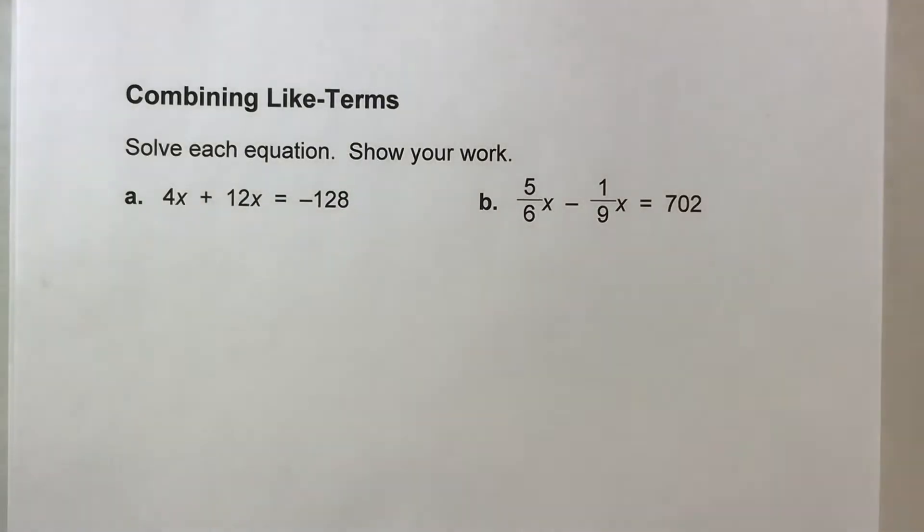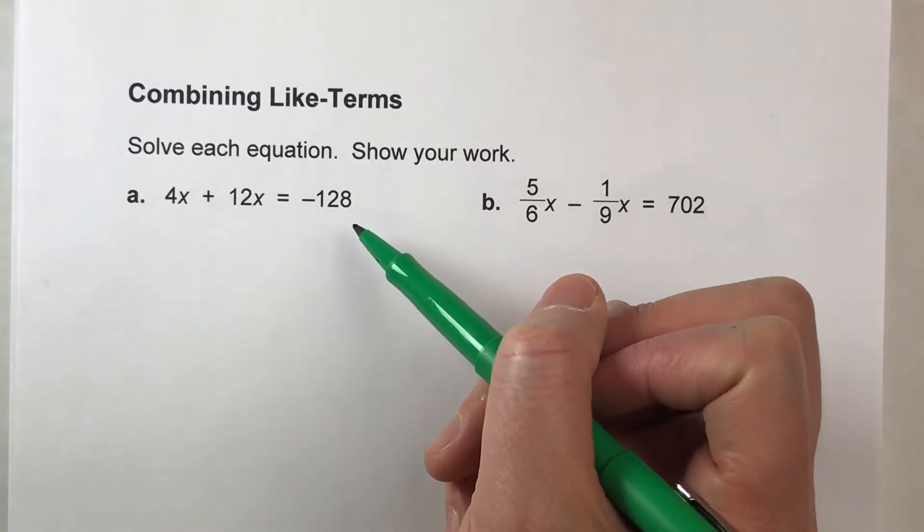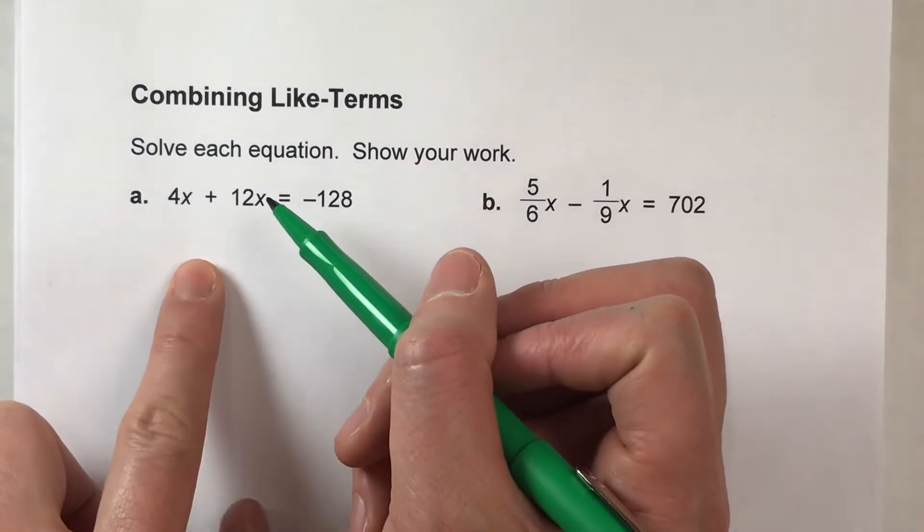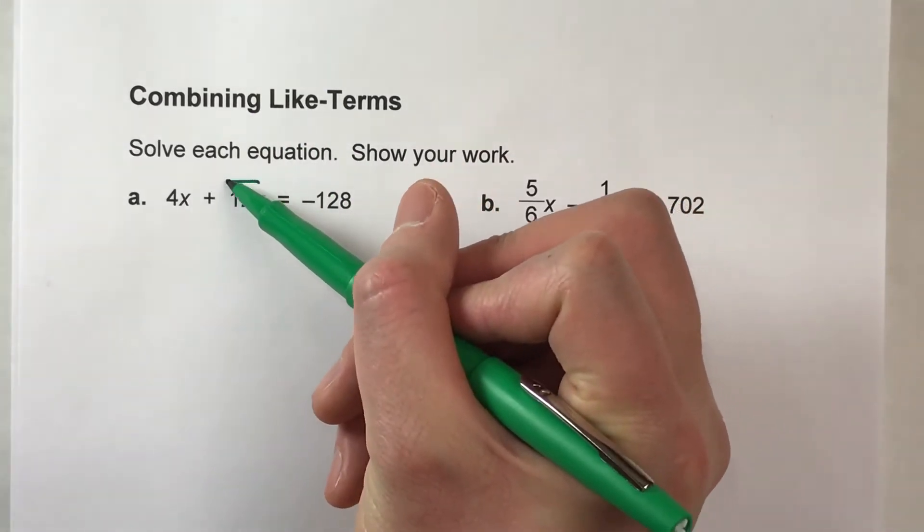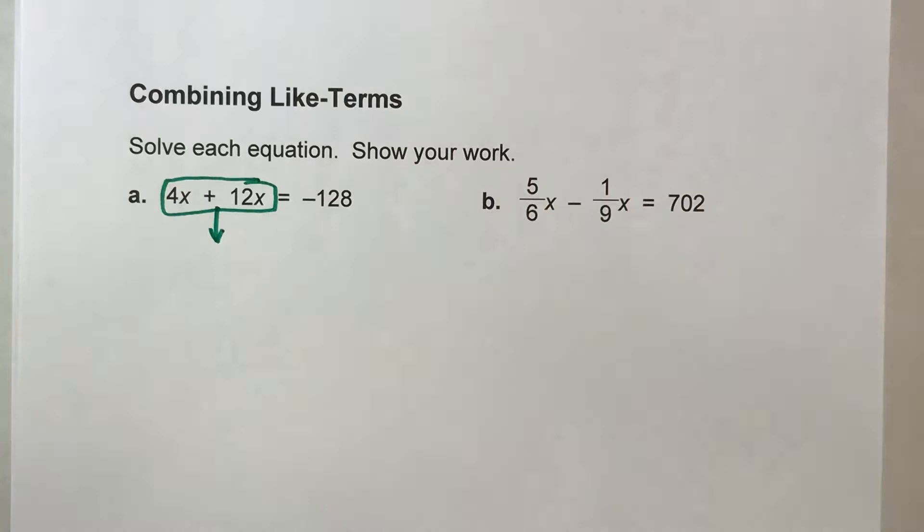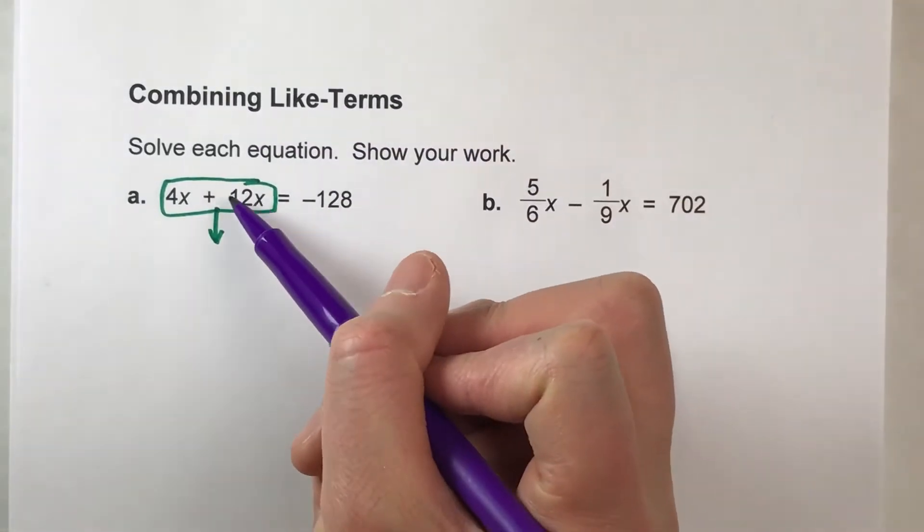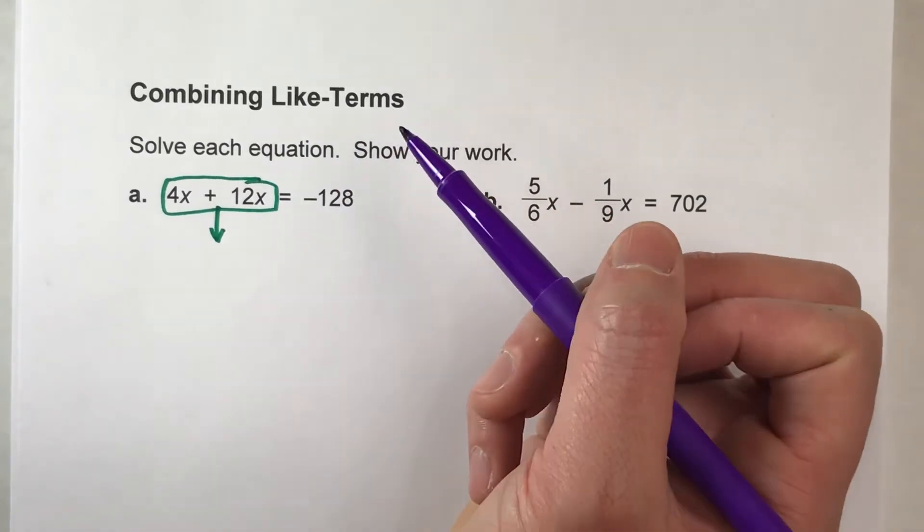Okay, for example, on this first one, we've got 4x plus 12x equals negative 128. Notice on the same side of the equal sign, we have two groups of x's. So we are going to combine them together. And that's what we mean by combining like terms. They have the same variable ending, so they are like terms.